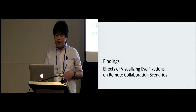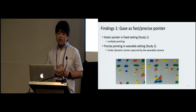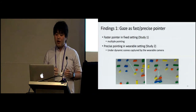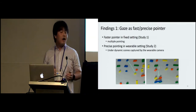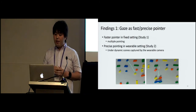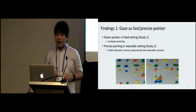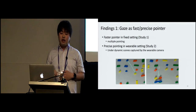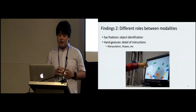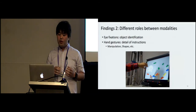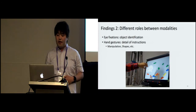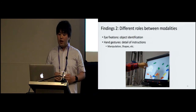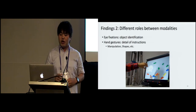We report important effects of visualizing fixations from the studies. The first finding is the pointing ability of visualizing eye fixations — in the first study, we observed fast object identification, and gaze trails enabled multiple pointing at a time. In the wearable device setting, the collaborator achieved accurate pointing under a dynamic scene captured by the head-mounted camera. The second finding is different roles between instruction modalities: eye fixations are mainly used for pointing out specific objects, while hand gestures transmitted details of instruction, such as manipulation.